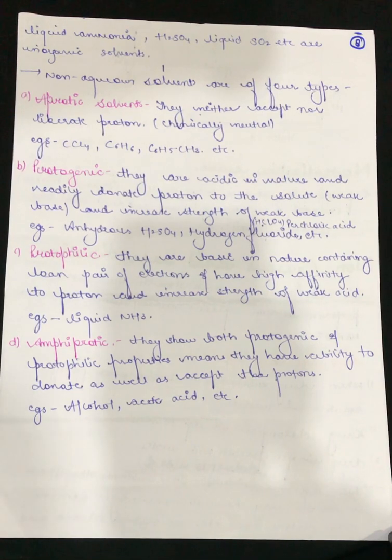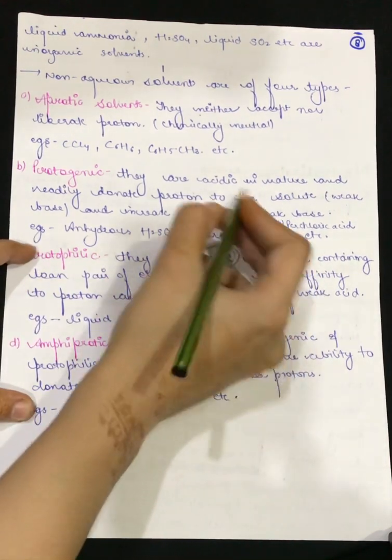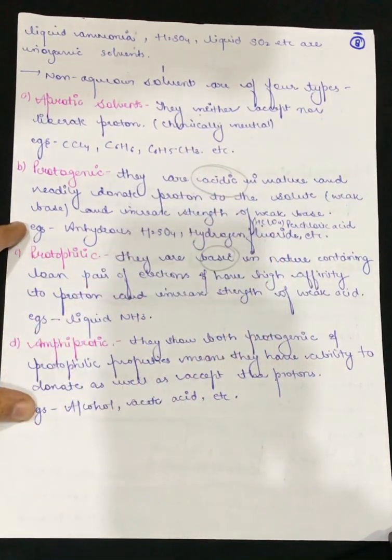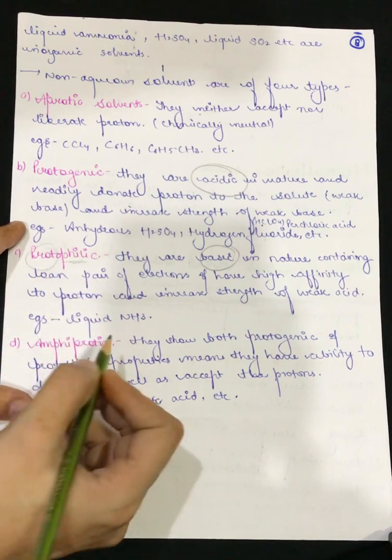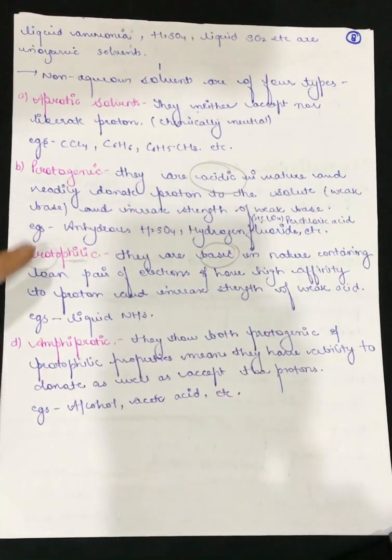Philic and phobic are two terms. Philic means loving towards and phobic means scary towards. Protophilic solvents are basic in nature, they contain lone pair of electrons and they have very high affinity to proton. As their name suggests, they are loving towards proton and increase the strength of weak acid. For example, liquid ammonia.